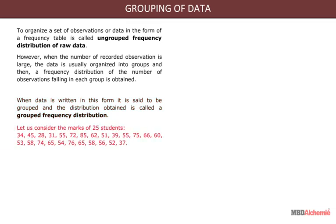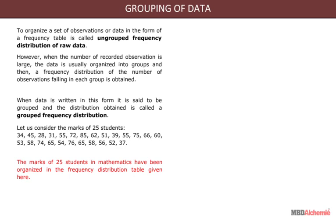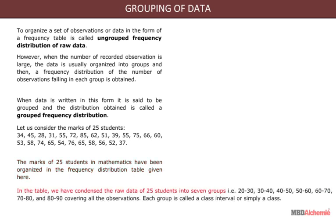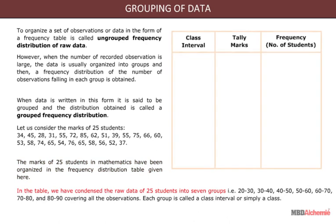For example, let us consider the marks of 25 students. The marks of 25 students in mathematics have been organized in the frequency distribution table given here. In the table, we have condensed the raw data of 25 students into seven groups, that is 20 to 30,